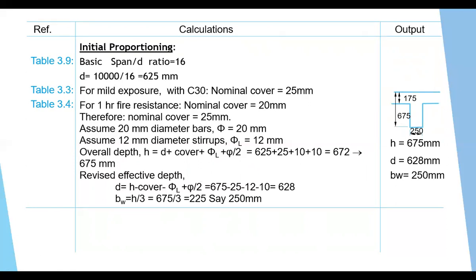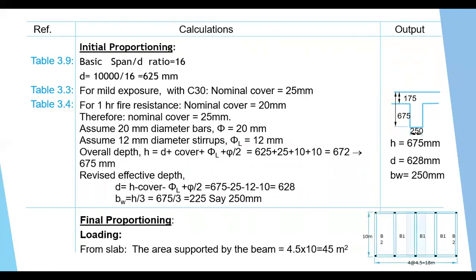Once initial proportioning is complete, we move to final proportioning, starting with calculating loads. Loading includes load from the slab, self-weight, and wall loads if any — here there are no wall loads. The beam B1 carries the slab area of 10 m × 4.5 m = 45 m². These are one-way slabs because the long side divided by the short side is greater than 2, so load transfers from the short direction, giving 2.25 m from each side.